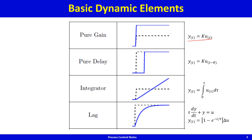Then we have the pure delay, where the output is k times the input but the input is delayed by theta time units. We have the integrator, where the output is the integral of the input. Then we have the lag, described by a first-order differential equation with time constant tau. Its response to a unit step is 1 minus e to the power minus t over tau, times the magnitude of the step delta u.